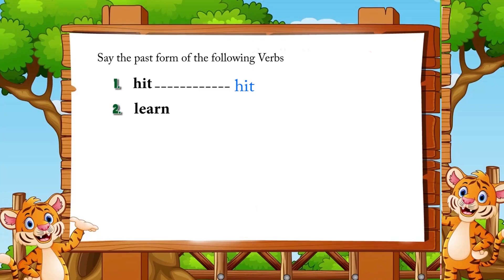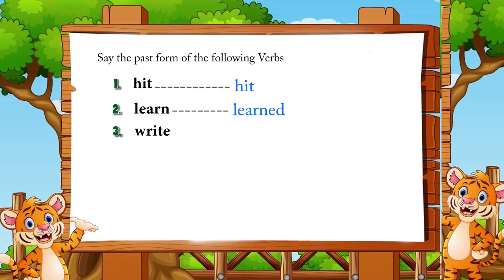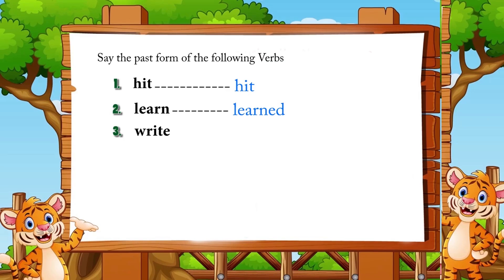Number two: learn. The past form of learn is learned — it adds -ed, it is a regular verb. Number three: write. If you said wrote, good. The past form of write is wrote.